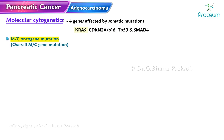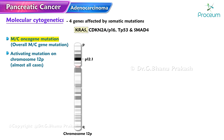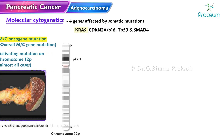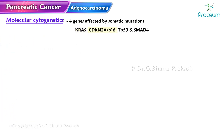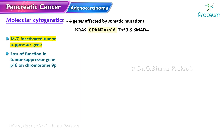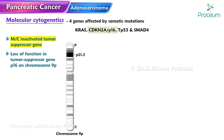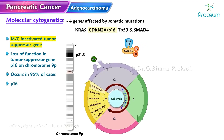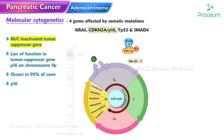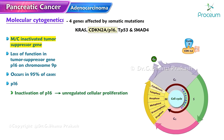An activating mutation of KRAS on chromosome 12p occurs in almost all cases of pancreatic adenocarcinoma. The p16/CDKN2A gene is the most commonly inactivated tumor suppressor gene in pancreatic cancer. A loss of function in p16 on chromosome 9p occurs in about 95% of cases. Normally, p16 inhibits the transition from G1 to S phase by inhibiting cyclin-dependent kinases CDK4 and CDK6; inactivation of p16 leads to unregulated cellular proliferation.